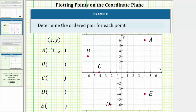Now let's look at point B, starting at the origin. We'd have to move left six units to negative six on the x-axis, so the x-coordinate is negative six. From here, we have to move up three units in the direction of the positive y-axis, which is the reason why the y-coordinate is positive three. Notice how this point lines up with negative six on the x-axis and positive three on the y-axis. The ordered pair for point B is (-6, 3).